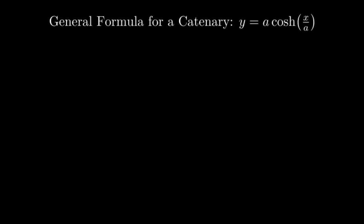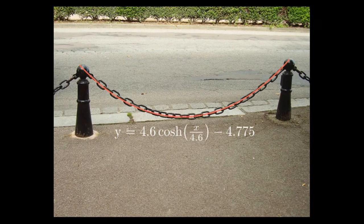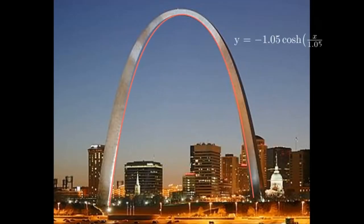Catenaries show up frequently in architecture. Imagine a long metal chain held up by two poles. The shape that this idealized chain acquires as it hangs is roughly equal to a catenary. In addition, catenaries often show up in the design of arches and bridges.